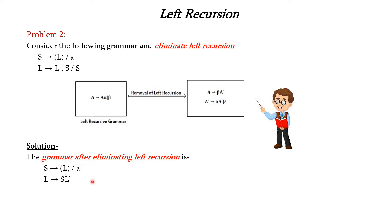The second production is rewritten as follows. In the place of A we have L, so L → beta A'. Instead of beta we consider S, and we introduce L' instead of A'. This L' is rewritten as alpha A' | epsilon, where alpha is comma S, A' is L', and epsilon. This is the grammar after the elimination of left recursion.